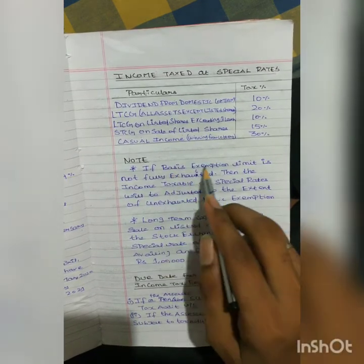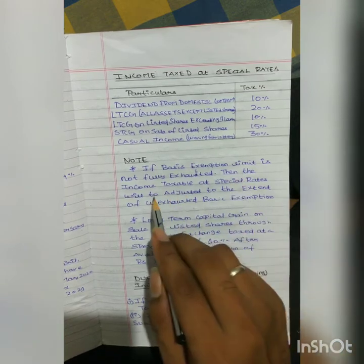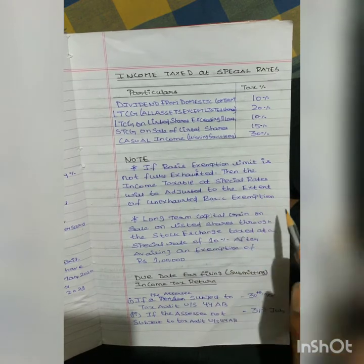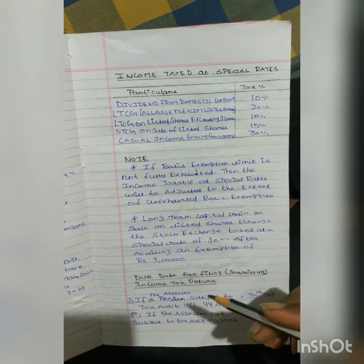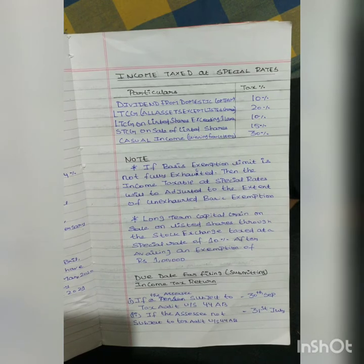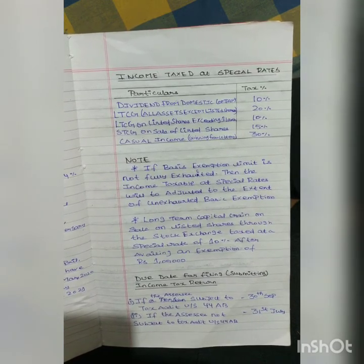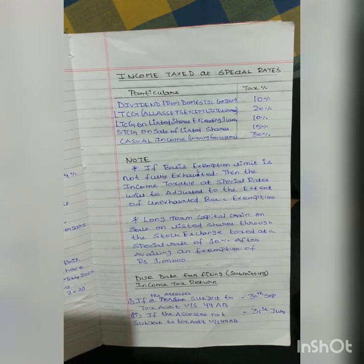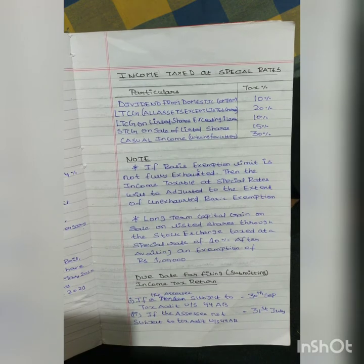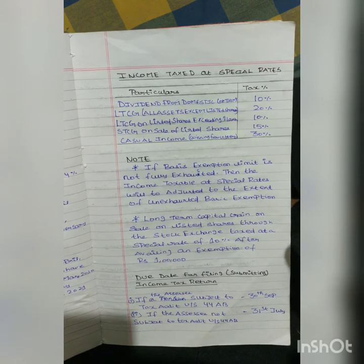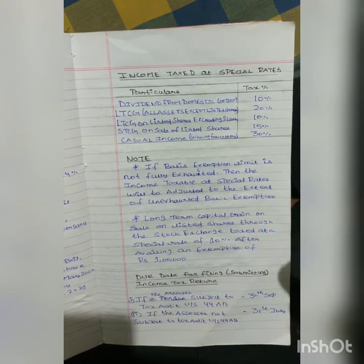Note: if the basic exemption limit is not fully exhausted, income taxable at a special rate will be adjusted to the extent of the unexhausted basic exemption. For example, if normal income is 2 lakhs and casual income is 3 lakhs, since the basic exemption limit is 2.5 lakhs and normal income is only 2 lakhs, the remaining 50 thousand can be transferred from the casual income to exhaust the basic exemption.